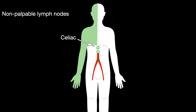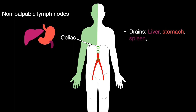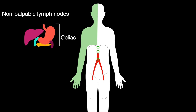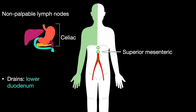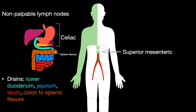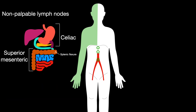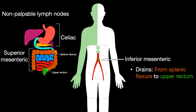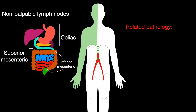The celiac lymph nodes drain the liver, stomach, spleen, pancreas, and upper duodenum. The superior mesenteric lymph nodes drain the lower duodenum, jejunum, ileum, and colon to the splenic flexure. The inferior mesenteric lymph nodes drain the splenic flexure to the upper rectum. Related pathology includes mesenteric lymphadenitis.